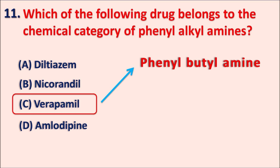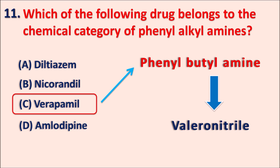This butylamine can also be incorporated as another side chain — the valeronitrile — so verapamil is a valeronitrile derivative which contains the phenylbutylamine moiety.